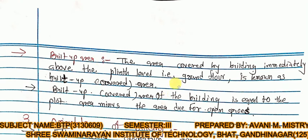Built-up area: the total area covered by the building immediately above the plinth level, that is the ground floor, is known as built-up area. Built-up area of the building equals the plot area minus the area reserved for open spaces. So after deducting the open spaces from the plot area, the remaining area is called the built-up area.